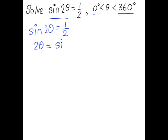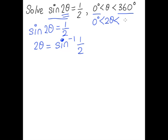Before we proceed, let's look at the bounds given. Theta is between 0 and 360 degrees, but we are solving for 2θ, so we need to express the bounds in terms of 2θ. We multiply both bounds by 2: 0 multiplied by 2 is 0 degrees, and 360 degrees multiplied by 2 gives us 720 degrees. So 2θ ranges from 0 to 720 degrees.